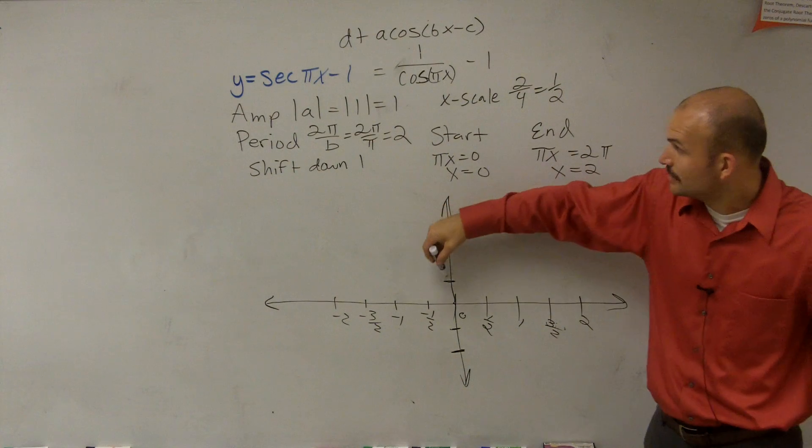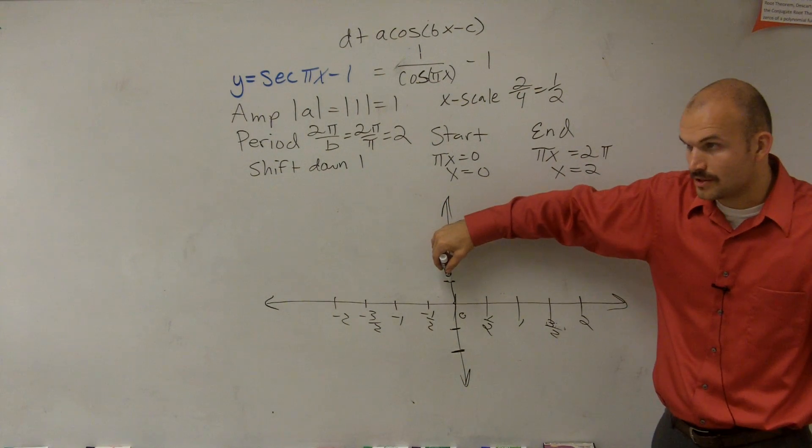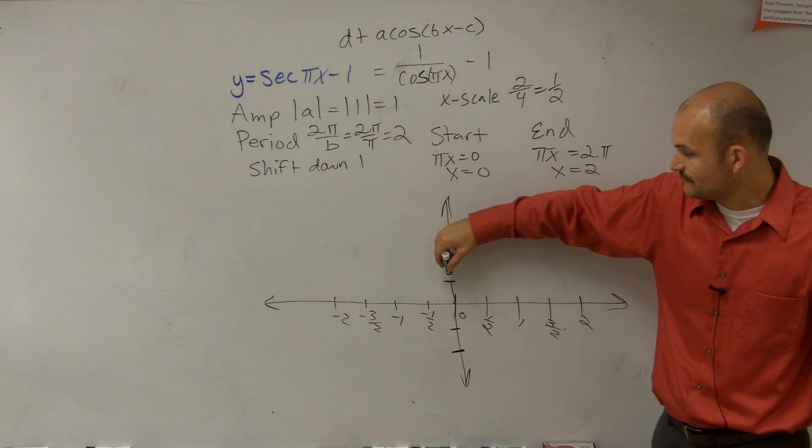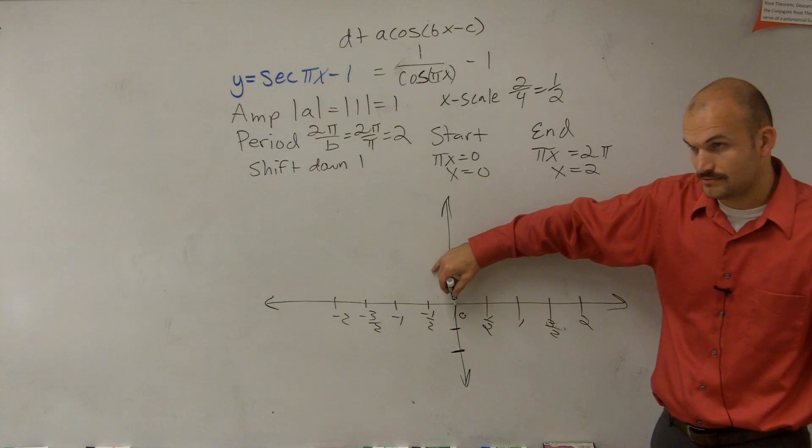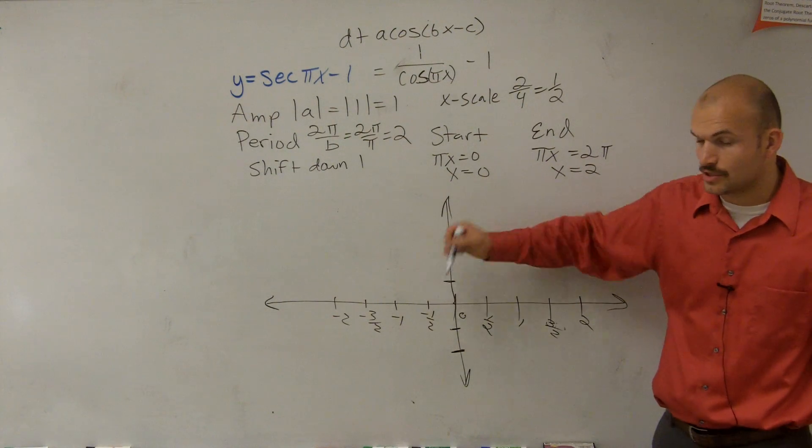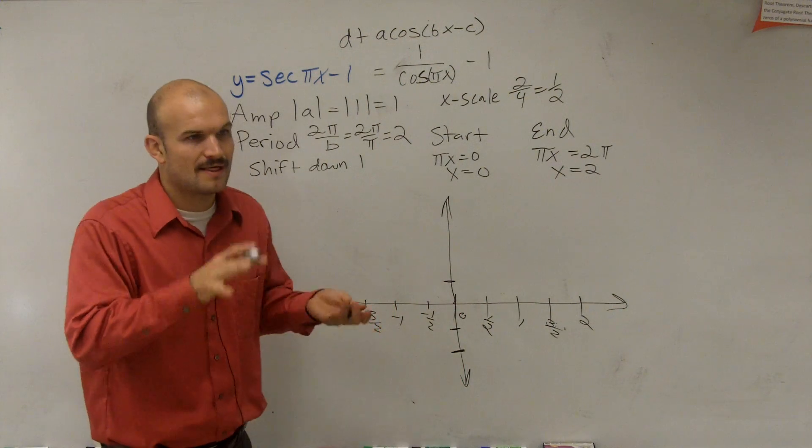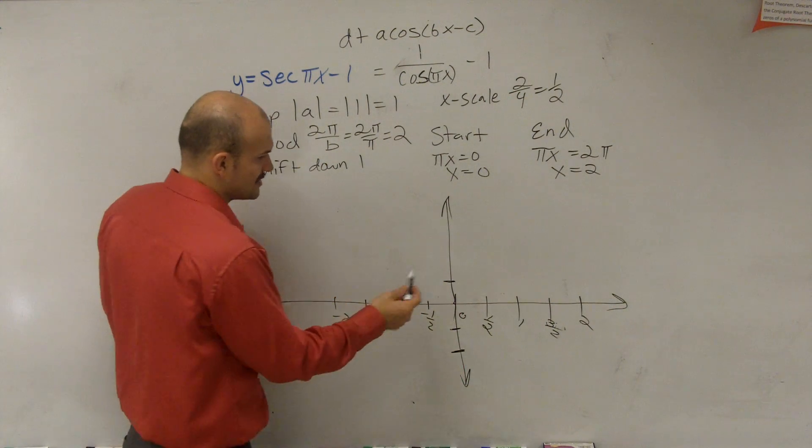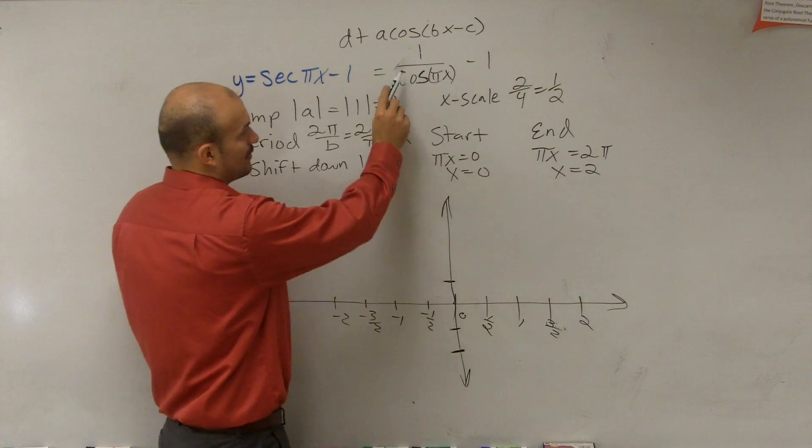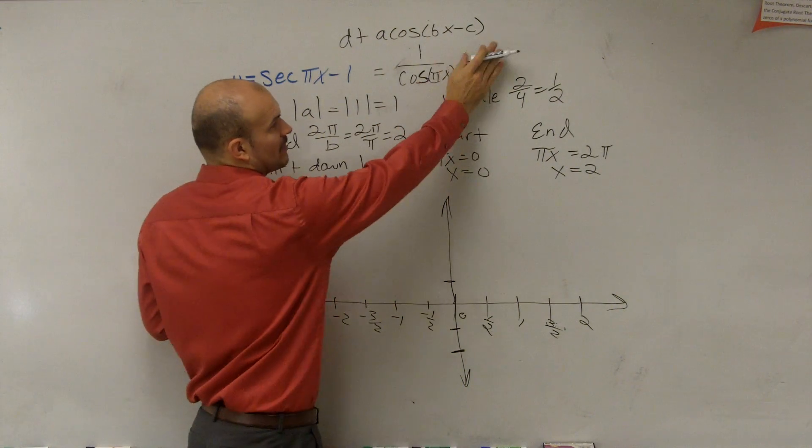So now we're looking at the cosine graph. Now remember, the parent function of the cosine graph started at 1 comma 0. But now what we're doing is we're shifting that graph down 1. So actually, what I'll do to help you guys out is I'm going to graph the parent function first. Then we'll graph the transformation so you guys can see it.